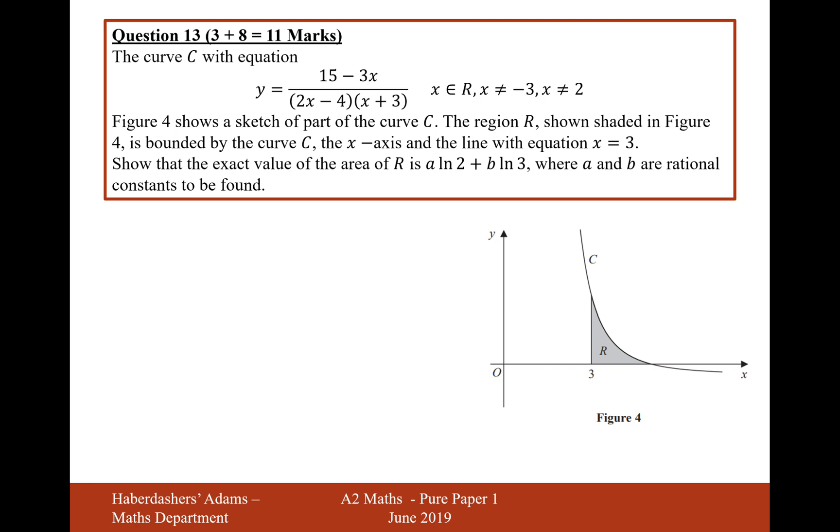Show that the exact value of the area R is a ln 2 plus b ln 3, where a and b are rational constants to be found. What we first need to find out is this value here. And this value here is likely to be x equals 5, because that will be when your y coordinate will equal 0. So it's going to be an integration between 5 and 3 of this expression here. But actually, this expression is going to be integrated after we've put these into partial fractions. This is going to be a partial fraction question first. 15 minus 3x over 2x minus 4, x plus 3 equals a over 2x minus 4, plus b over x plus 3.